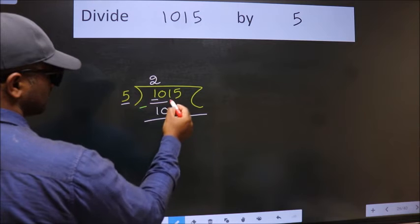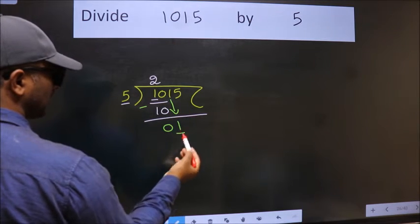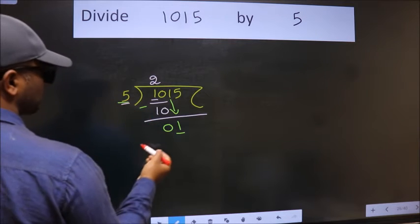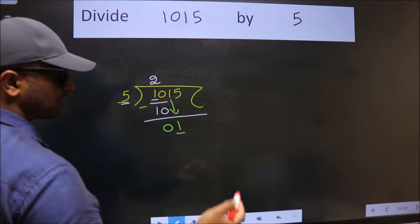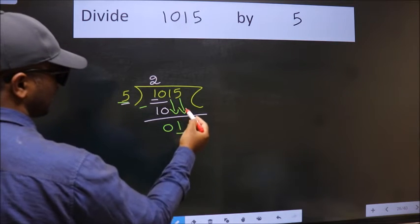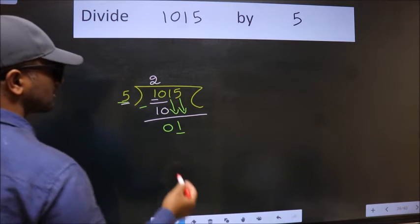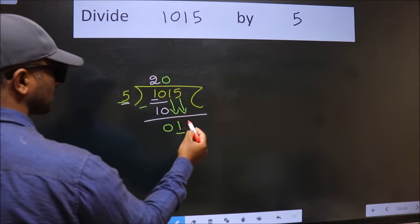After this, bring down the beside number. So, 1 down. Now, here we have 1, here 5. 1 is smaller than 5. So, we should bring down the second number. And the rule to bring down the second number is put 0 here. Then only we can bring this number down.